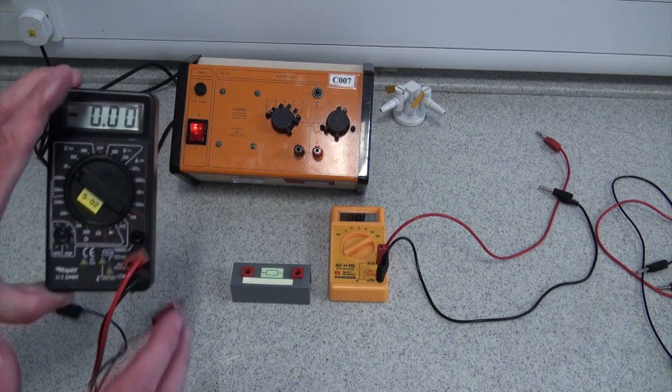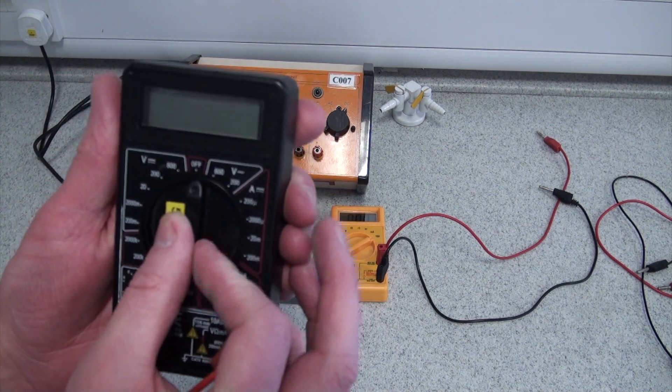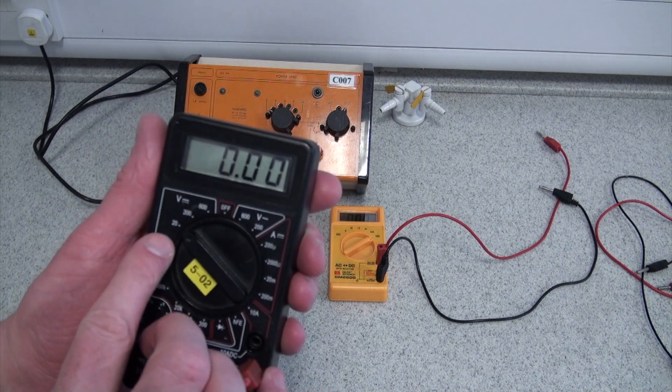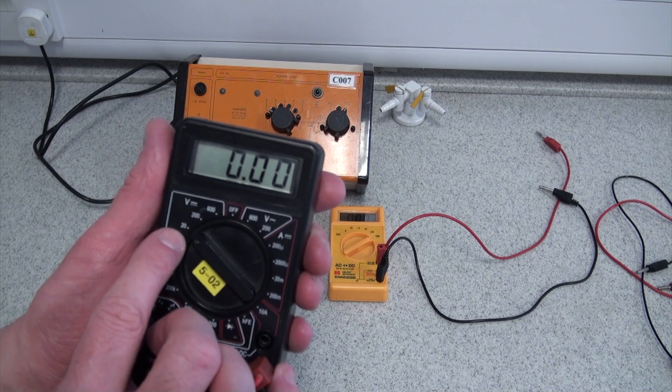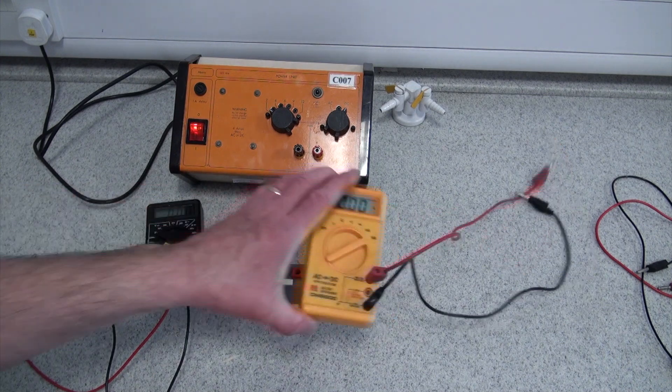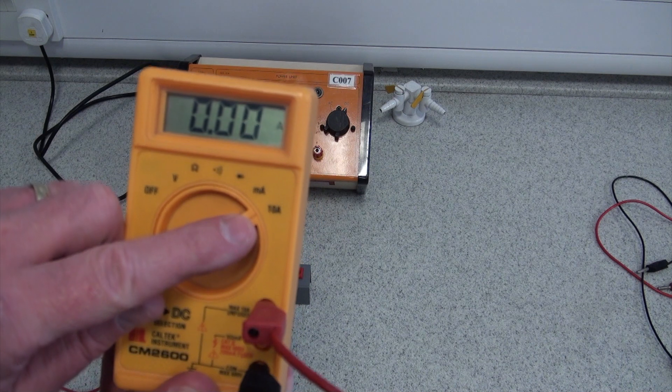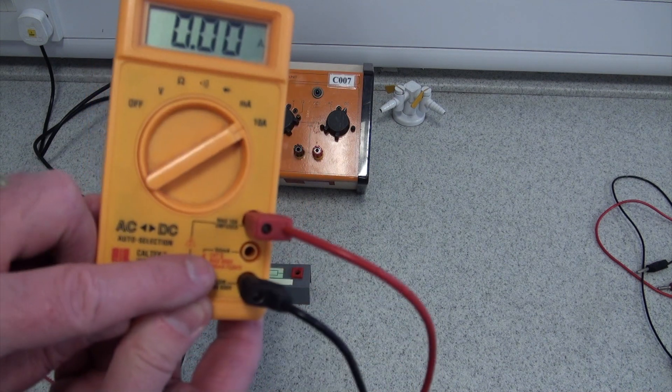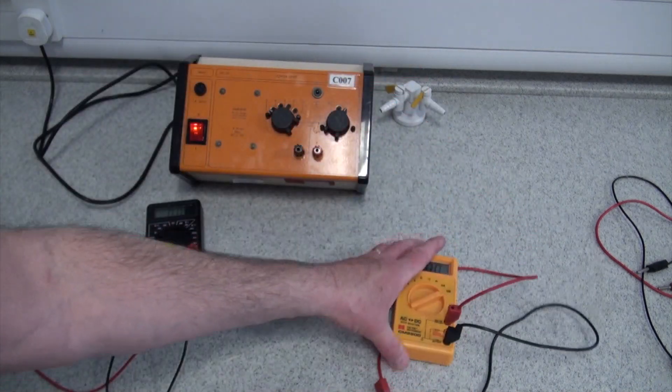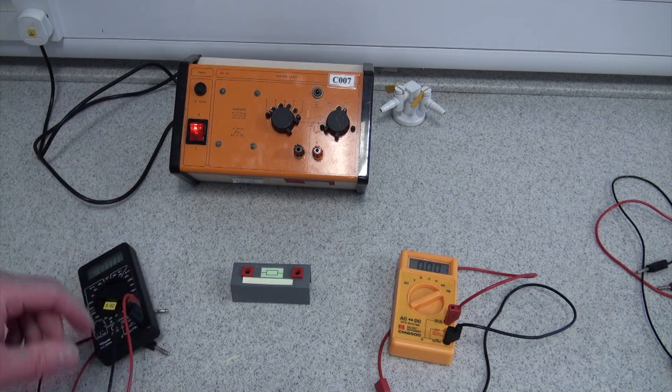We have 2 meters here. This one here is a multimeter which I have got set to measure voltage. I'm not going to measure any more than 20 volts, so I've got it set to 20 volts DC. And this one here, I'm going to use as my ammeter. It can measure up to a maximum of 10 amps. Yellow for ammeter. Black one is going to be our voltmeter.